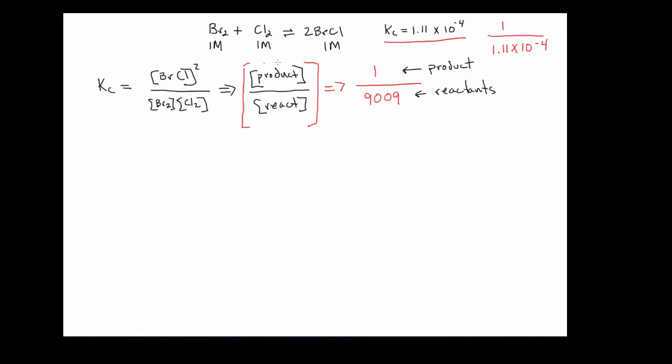What makes this problem different is that we've combined concentrations of all three things in the same reaction mixture. At the moment, we don't know where we are relative to this ratio. What we need to do is figure out a way that we can determine where we are relative to this 1 over 9009 ratio.